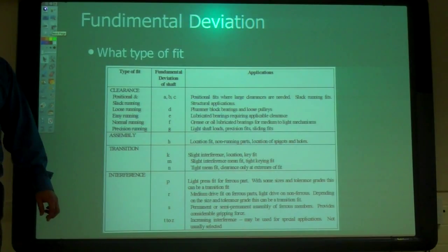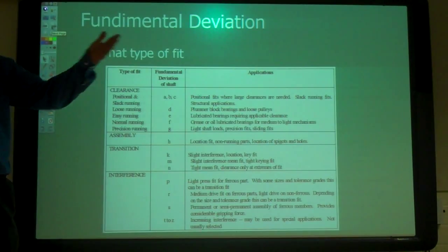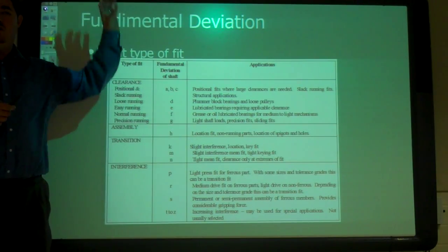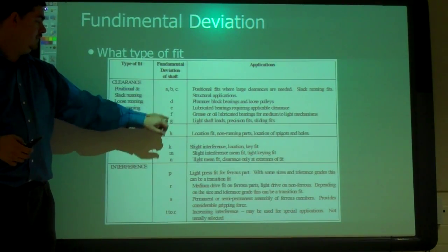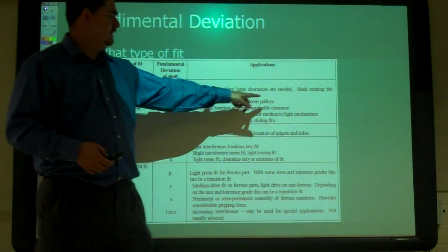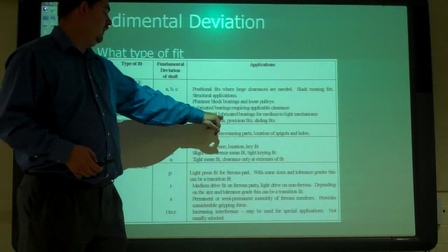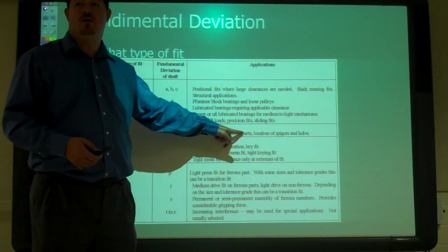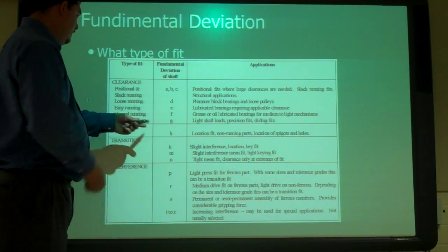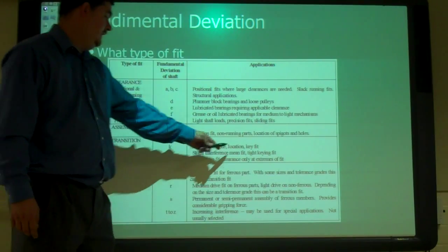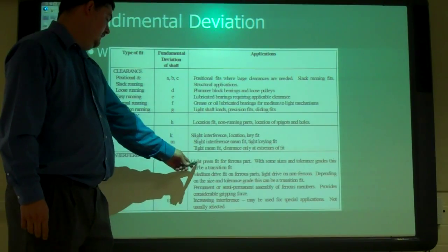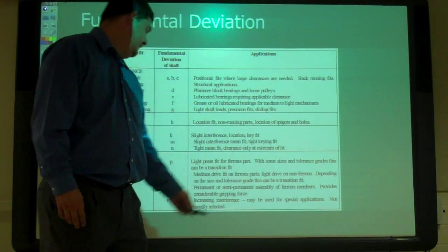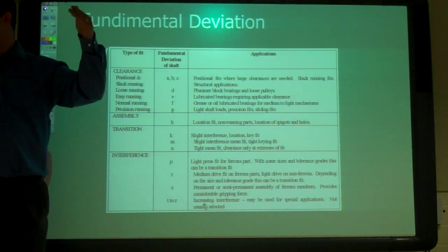So I kind of got this out of order. So the letters, so the H and the F and all those, that's depending on the type of fit we have. So this is using the shaft system, or the hole system. So the shaft would be one of these based on what it is. So the hole is going to be an H, and the shaft, if it's an A through a C, that's for positional fit, and it's got slack running fits. And F, things that need to be greased or oil lubricated, bearings, medium to tight mechanisms. H, location fit, non-running parts, or non-moving parts. K, slight interference, like keys. Interference, so the light press, medium press, permanent press, for ferrous metals. T through Z, for special applications, not usually done. So that tells you what kind of a tolerance you're going to use, so the space in between them.